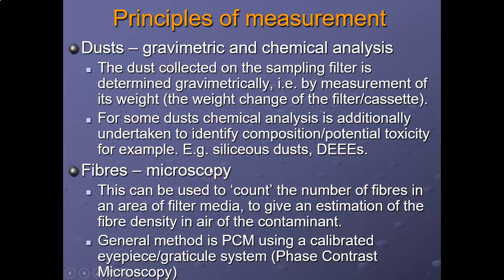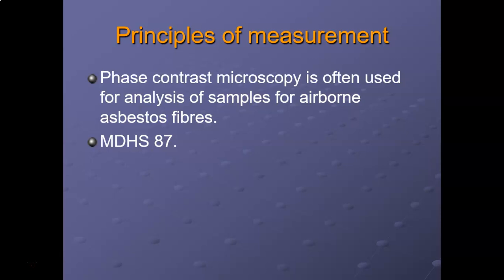Microscopy for dust can be used to count the number of fibers in an area of filter media to give an estimation of fiber density in air. Generally, a phase contrast light microscope is used to examine the number of fibers — for example asbestos — that are in the filter. It uses the principle of light and the size or thickness of those fibers. The phase contrast microscope gives a different frequency, like a different intensity of light, allowing identification of what is being examined.